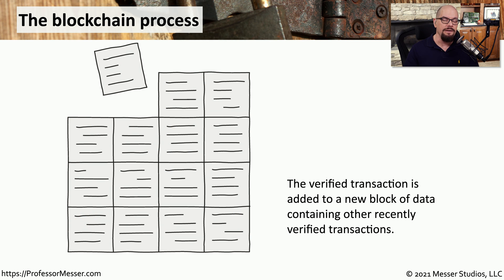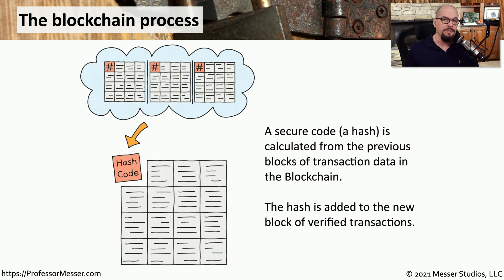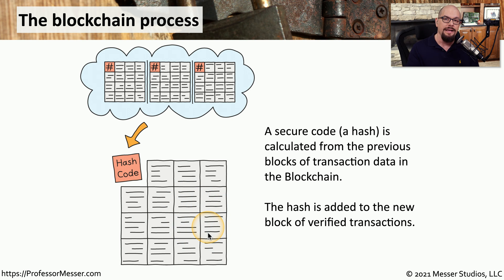Once the transaction is verified, it's added into a block of other transactions that have also been verified — this is the block of the blockchain — allowing us to process many transactions at the same time. To provide integrity to the process, we use a hashing function to hash all of these transactions and add the hash to the block. That way, if anything changes with this block, we know it was modified and therefore the block would be invalid.